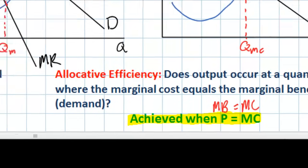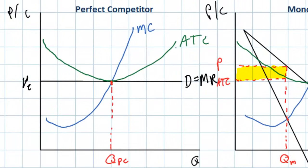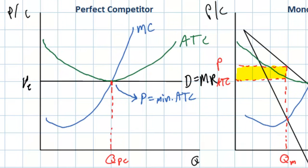Let's begin with productive efficiency. For the perfectly competitive firm, in long-run equilibrium the price does equal the minimum average total cost. The reason is that there are no barriers to entry and firms produce an identical product. If price were any higher than minimum ATC, firms would earn profits, new firms would enter, and increased competition would reduce demand for each individual firm, eliminating profits until price equals minimum average total cost.